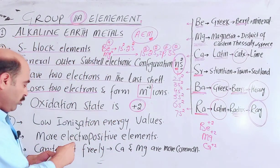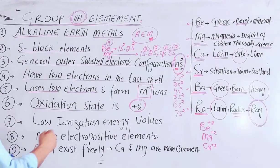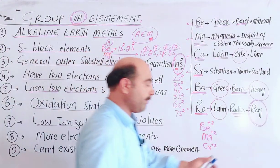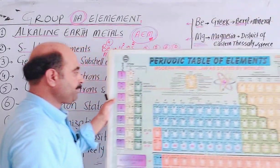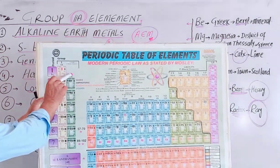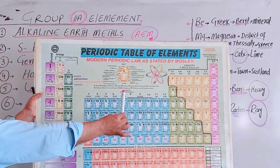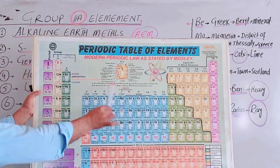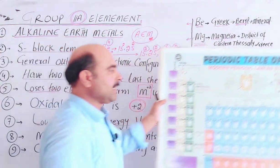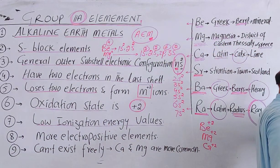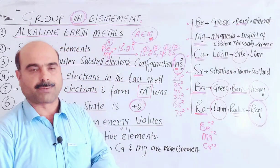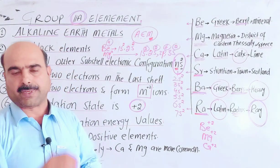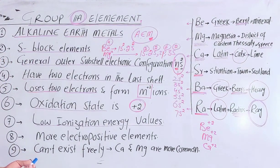They lose two electrons, and losing electrons requires energy. They have low ionization energy values because they are on the left side of the periodic table. Their size is larger. When size is large, the valence electrons are far from the nucleus, so the attraction is weaker. Less energy is required to remove the electrons, hence they have low ionization energy values.